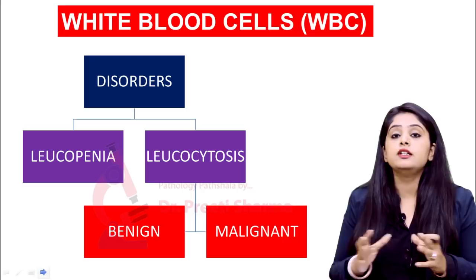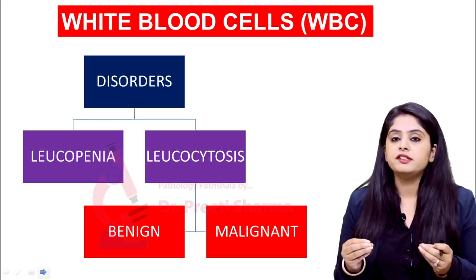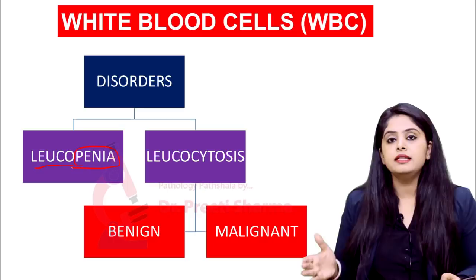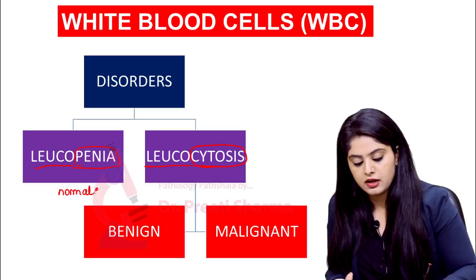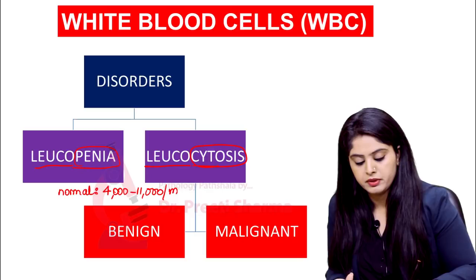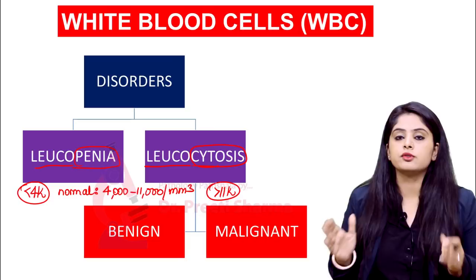Moving ahead, let us consider certain disorders. Disorders in WBCs — also called leukocytes — if the count goes down, you call it leukopenia; if the count goes high, you call it leukocytosis. The normal WBC count is 4,000 to 11,000 per cubic mm. Anything less than 4,000 would be a leukopenic condition; anything more than 11,000 you would call leukocytosis. Just remember 4 to 11 is the range.